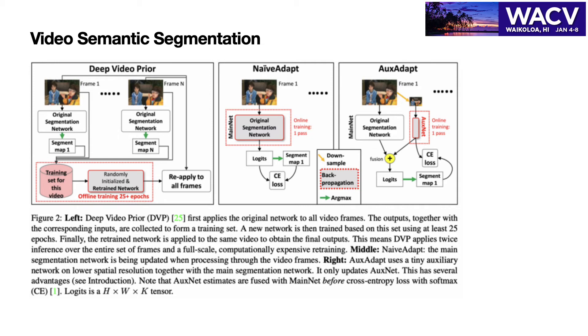Then it constructs a training set containing all the frames and segmentation results for training a new network. The new network is trained using at least 25 epochs from scratch.